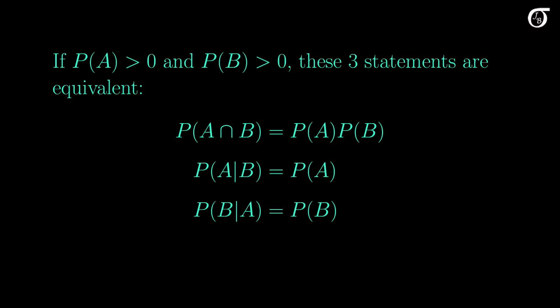For the case where both probabilities are non-zero, these three statements are equivalent, and they all mean that A and B are independent events. Each of these three statements implies the others. If one of these statements is true, then they are all true, and A and B are independent.